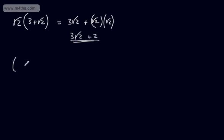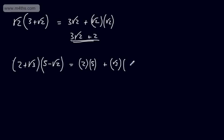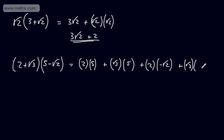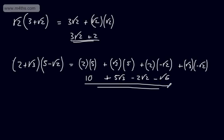We might be asked to expand double brackets. Let's look at an example: 2 plus root 3, multiplied by 5 minus root 2. Using FOIL or a grid, we get 2 multiplied by 5, plus root 3 multiplied by 5, plus 2 times minus root 2, plus root 3 multiplied by minus root 2. So that gives us 10 plus 5 root 3, minus 2 root 2, minus root 6. We can see there are no like surds, and we can't manipulate those to make it look any prettier. That's expanded — it looks a bit of a mess — but we've multiplied term by term, simplified, and can't collect any like terms.